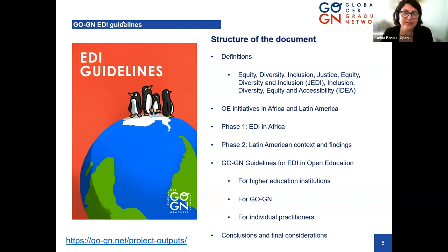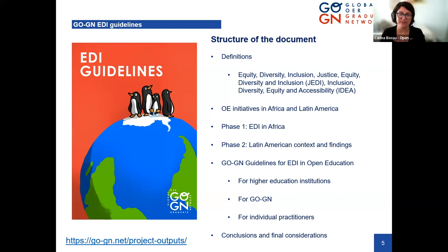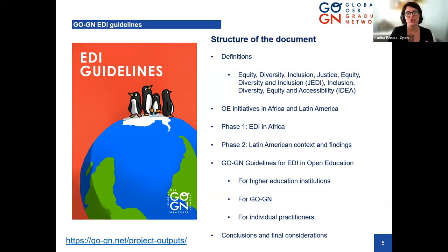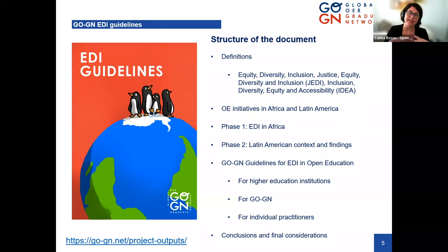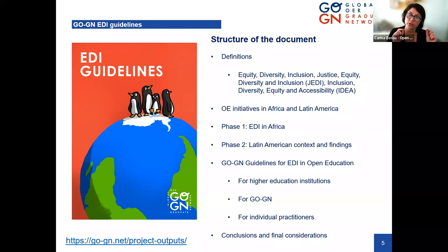Thanks, Paco. So we had these two phases where I had the privilege to work with Judith, Vivian, and Paco. Paco and I initially thought of a colleague project — a mentoring program, also a recommendation from the research undertaken. But for all the reasons included in the guidelines, that idea didn't progress. So we decided to put together the context and findings from the two phases and come up with some guiding principles. These are all based on the data we collected and analyzed.